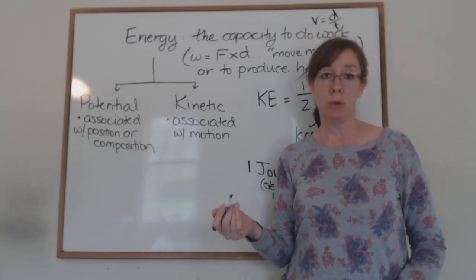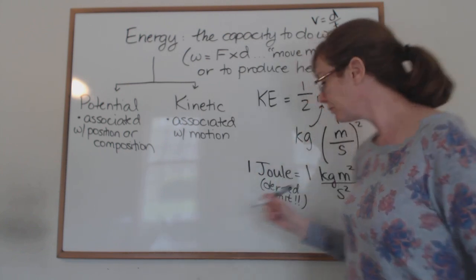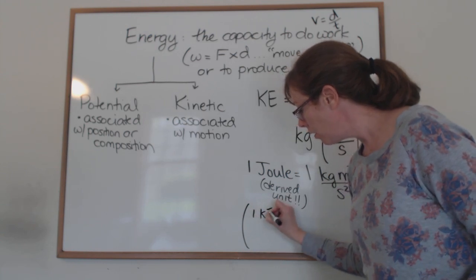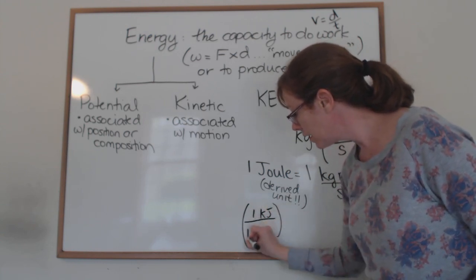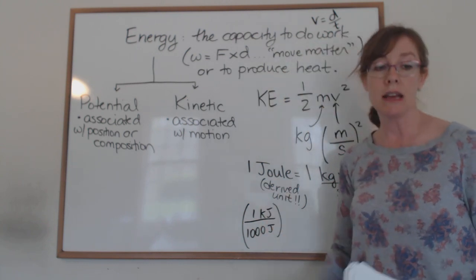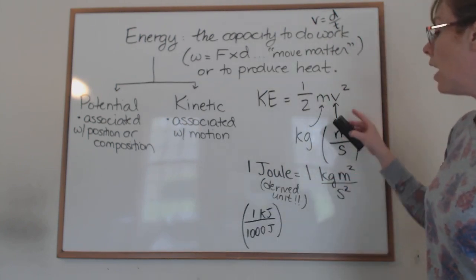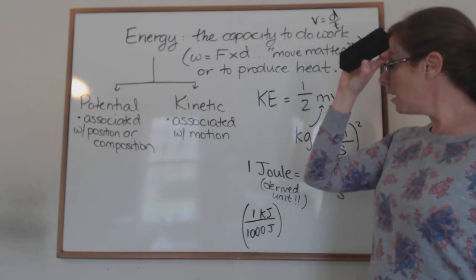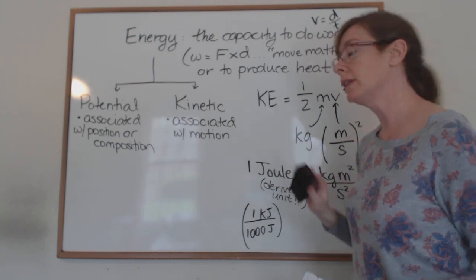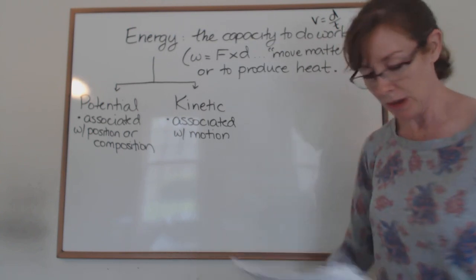A kilojoule is just a thousand joules — that's your conversion factor between kilojoules and joules. Other units include the calorie and the kcal, but we won't be using those. It's just joules and kilojoules for energy in this chapter.